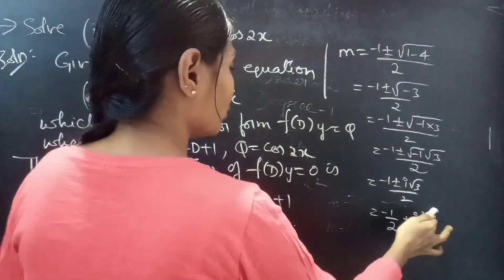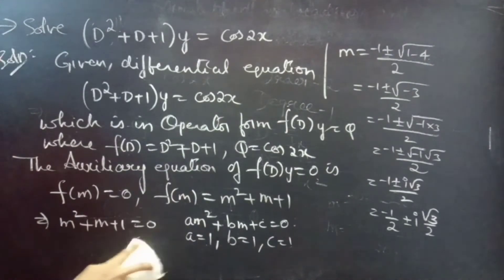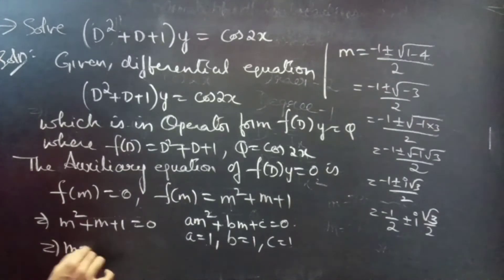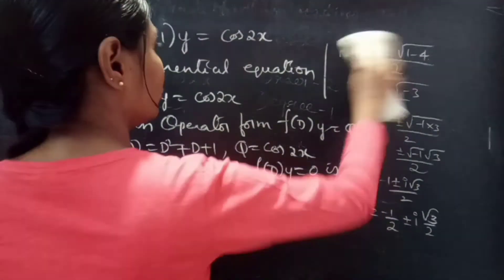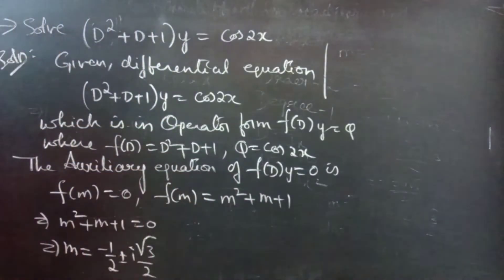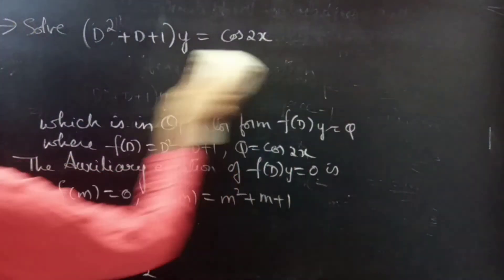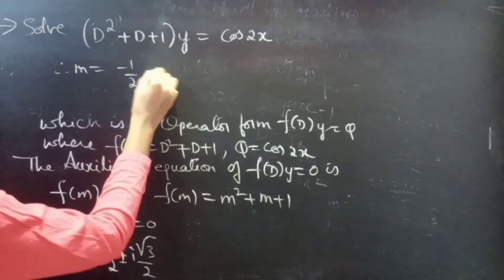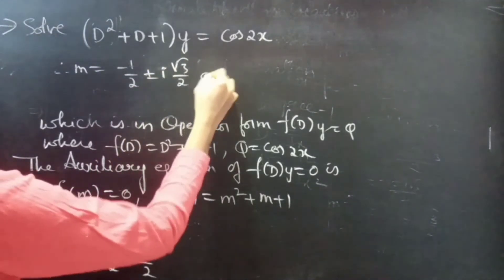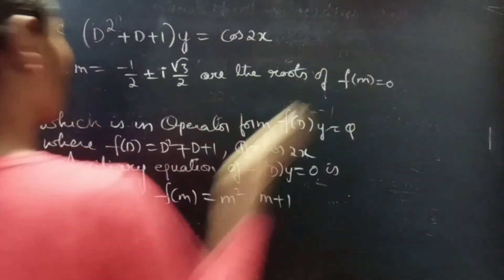So when m² + m + 1 = 0, we get m = −1/2 ± i·(√3/2), which are complex conjugate roots. Therefore m = −1/2 ± i·(√3/2) are the roots of f(m) = 0, that is the auxiliary equation, which are complex conjugate roots.